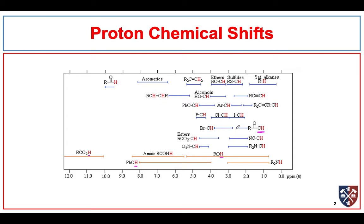The other thing we're going to be looking at is esters. Esters typically come very far out, somewhere around 4 ppm. So that's where we expect esters to come.